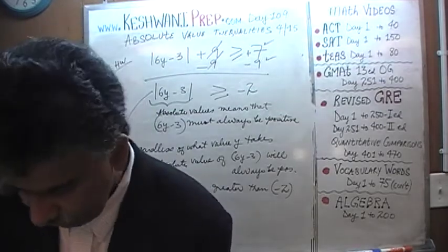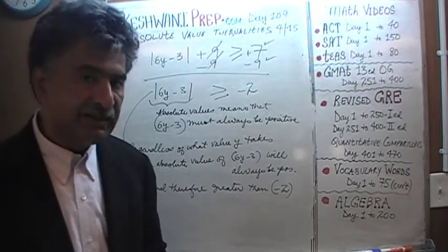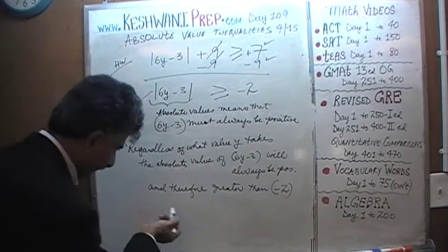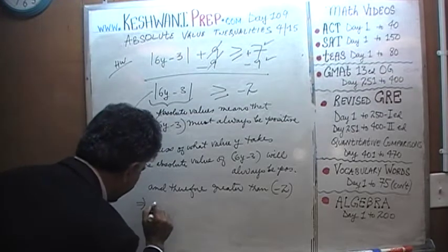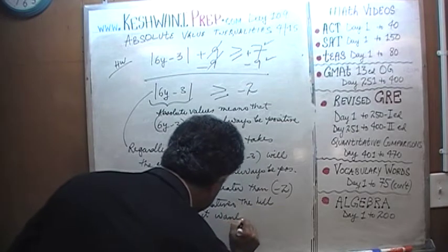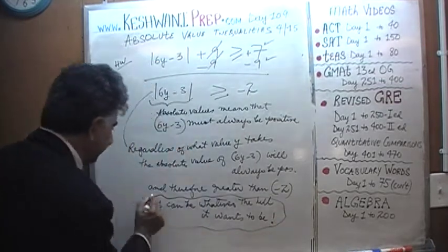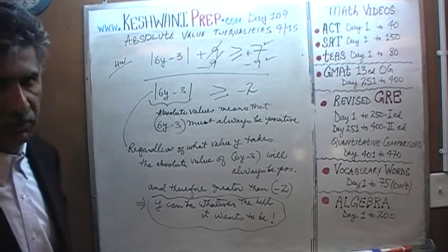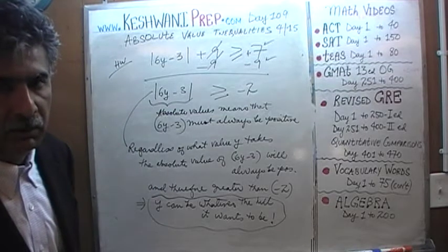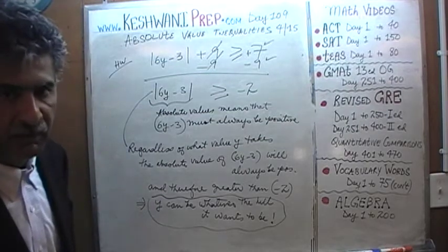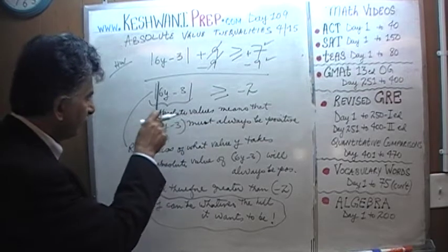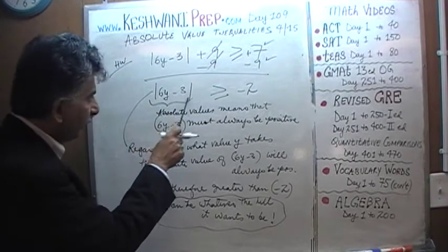How do we say this in the language of mathematics? But before that, let me put it in very simple, colloquial terms. The translation of all this is that Y can be whatever it wants to be — there are no restrictions on Y. Whether Y is going to be negative 37, positive 37, negative 2 million, or negative 45 billion, it doesn't matter. By the time you take the absolute value of 6 times this quantity minus 3, this quantity becomes positive and therefore will always be greater than negative 2.